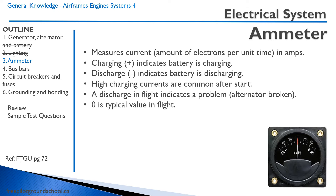A discharge usually only occurs if there is an alternator failure. In cruise flight it is typical for the ammeter to read zero, because the battery is fully charged and the alternator is providing the exact amount of current required to power the electrical system. However, after start it's not uncommon to have a very high charge rate, because the battery has been depleted and the alternator needs to recharge it.